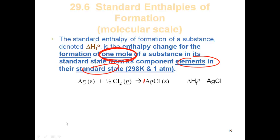So we have our silver solid — that's its elemental state at room temperature — Cl₂ gas, that's its elemental state at room temperature, forms my silver chloride, one mole. Therefore, I have to put a half in front of the chlorine to get this to balance out to one mole of silver chloride. So if you're talking about the delta HF of silver chloride, you should be able to write that reaction by knowing the definition of what delta HF is.